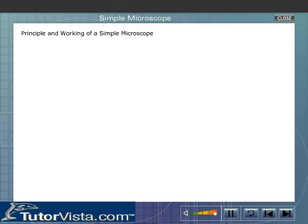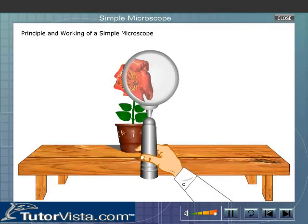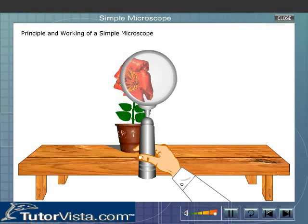Principle and working of a simple microscope. When an object is placed between the principle focus and the optical center of a convex lens, a virtual, erect and magnified image is formed.